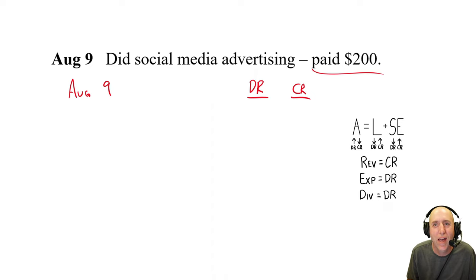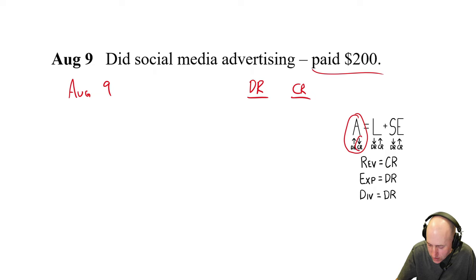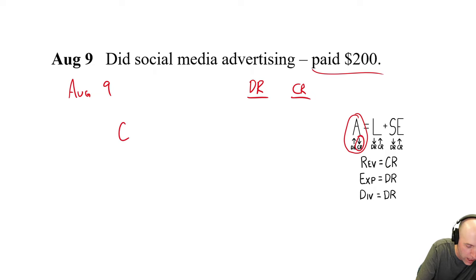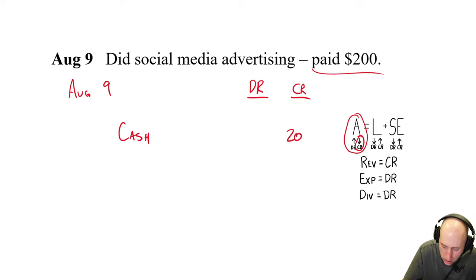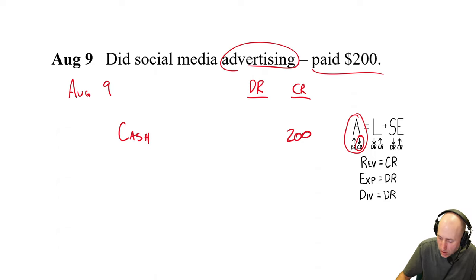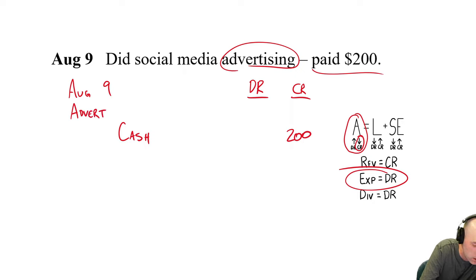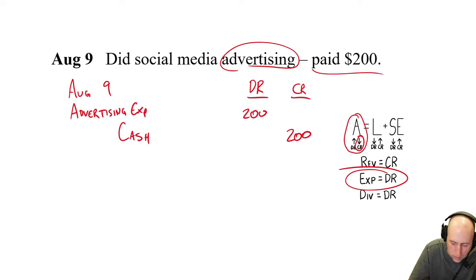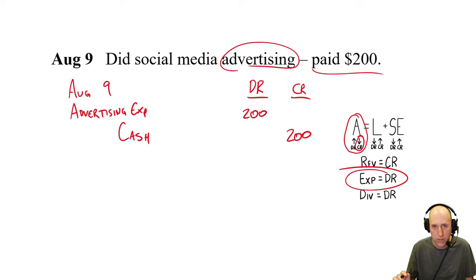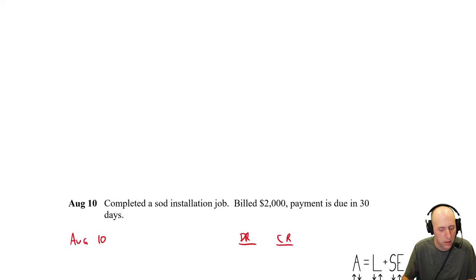Please make sure you're pausing the video and trying to solve each entry before I do. I know I'm going fast, but the idea is to give you a lot of practice. August 19th: Judy Smith invested $25,000 into the company in exchange for common shares. Did money change hands? Yes — Judy gave the company $25,000. The company's cash is going up, so debit cash $25,000.